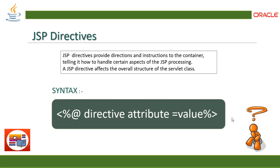A JSP directive provides directions and instructions to the container, telling it how to handle certain aspects of JSP processing. A JSP directive affects the overall structure of the servlet class. Since we all know that when we start making a JSP, the JSP container converts it internally to a servlet. So while conversion, all these tags, all these directives and JSP definitions are going to be converted into the servlet class internally. JSP directives make those connections and that piece of code in the form of tags.